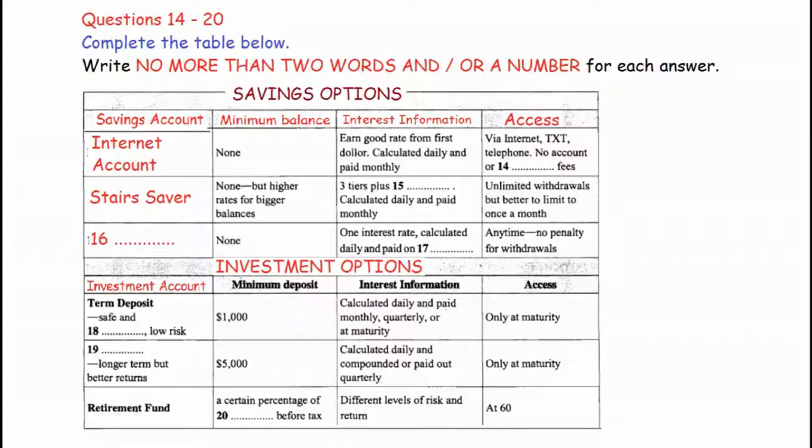Looking really long term, there is our retirement fund, which is a savings plan for retirement. There is no minimum deposit, but the good news is that you can choose to contribute a certain percentage of your income before tax is paid on it. As for interest, well, you choose a particular type of fund, which has a different level of return, depending on the level of risk. And access? Well, not before you turn 60 years old. As I said, it's a retirement scheme.